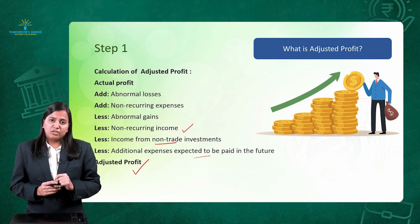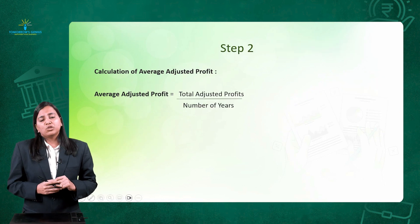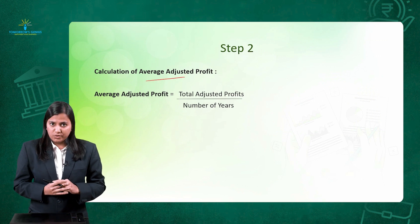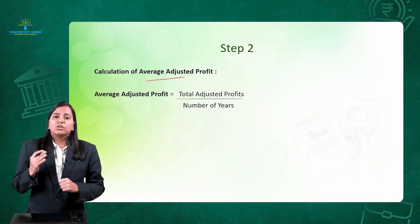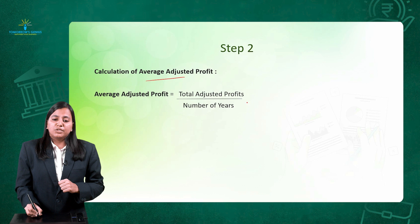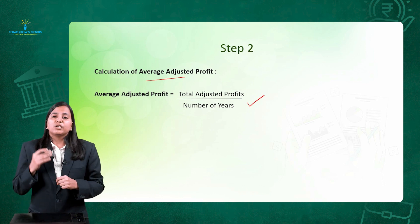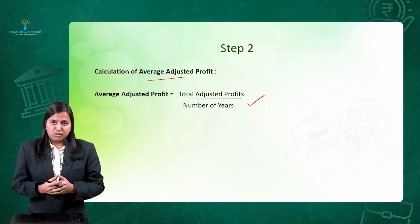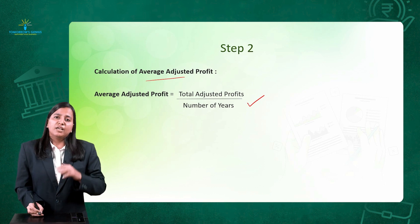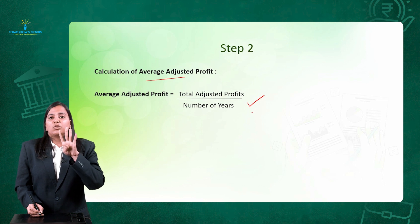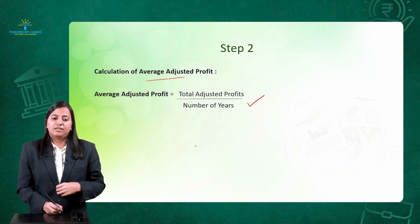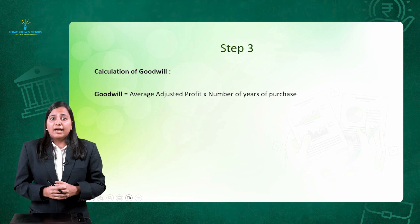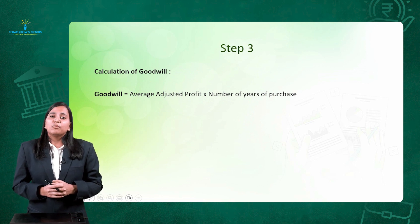In this way, we get the adjusted profit — that is Step 1. In Step 2, we calculate the average adjusted profit, which is total adjusted profit divided by number of years. For example, if data for 4 years is given, the number of years is 4. Step 3 is the final calculation of goodwill, given by: average adjusted profit multiplied by number of years of purchase.